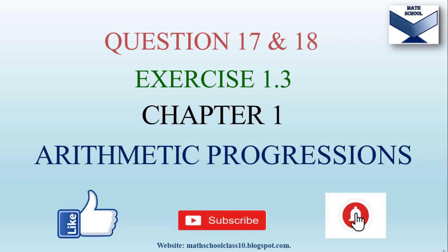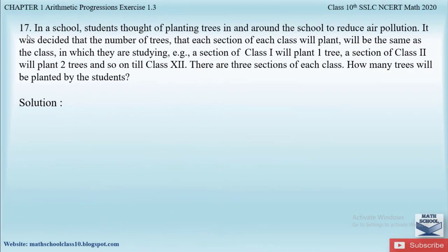Before we begin this video please like and subscribe to my channel and don't forget to hit the bell button to get the latest updates. Now question number 17 from exercise 1.3 says: in a school, students thought of planting trees in and around the school to reduce air pollution. It was decided that the number of trees each section of each class will plant will be the same as the class in which they are studying. A section of class 1 will plant one tree, a section of class 2 will plant two trees, and so on till the 12th class. There are three sections of each class. How many trees will be planted by the students?